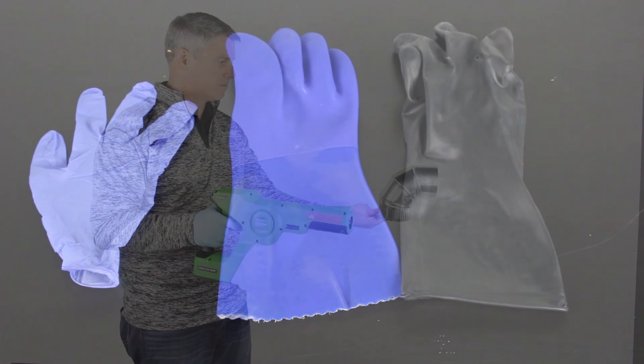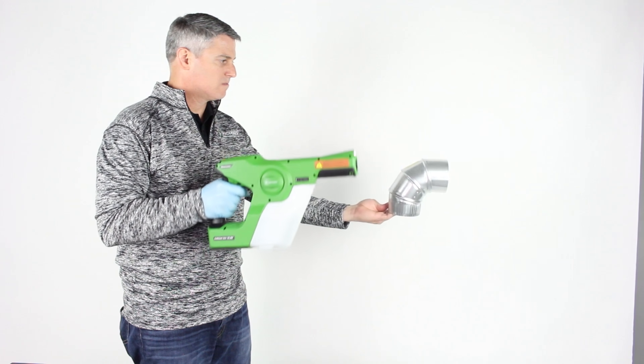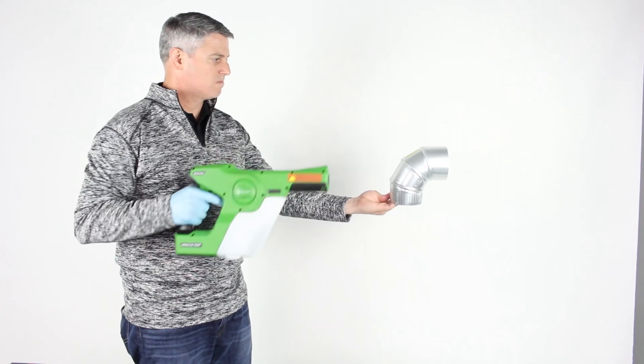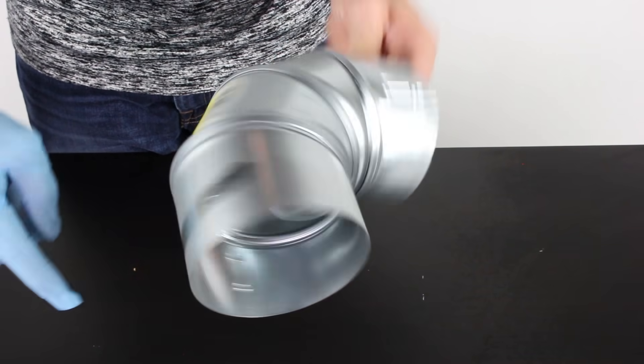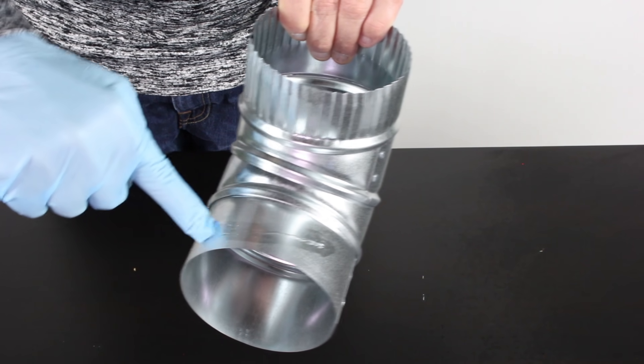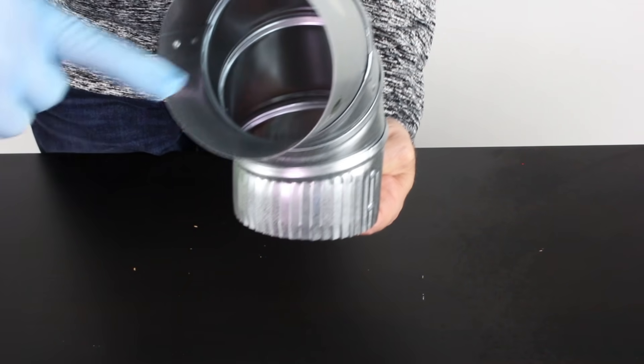In the first demo, I'm using a nitrile glove. When I spray with this, you'll see that we still get a full electrostatic charge on the particles, which you can see by the full wrapping effect and the turnaround effect that's getting the inside of the vent pipe.